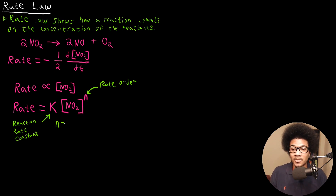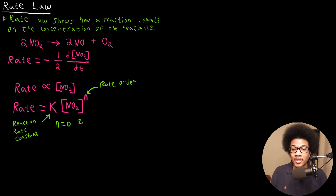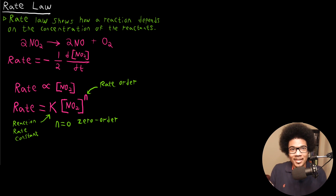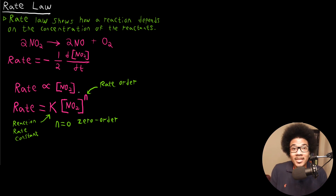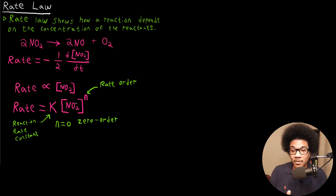What do we mean by rate order? This is basically telling you how much the rate is dependent on the concentration of your reactant. For example, if N is equal to zero — which it can be — we call that a zero order reaction. What that means in practice is that the reaction has no dependency on the concentration of the reactant. If N is zero, then anything raised to the zero power is going to be one, so the concentration has no effect on the actual rate.